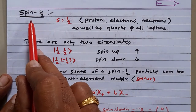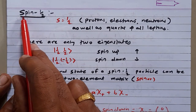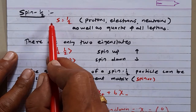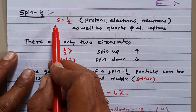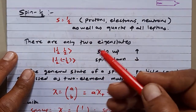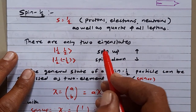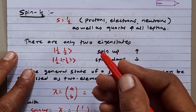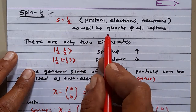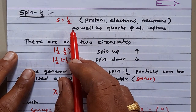Hello friends, now we will talk about the spin-half system. In continuation with the last lecture, why it is so important to consider the spin-half system is that the spin of the particle that makes ordinary matter — that is protons, neutrons, electrons, as well as all the quarks — all come under this spin-half system.